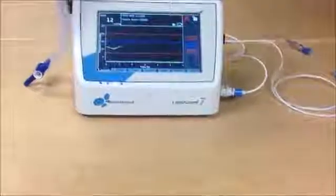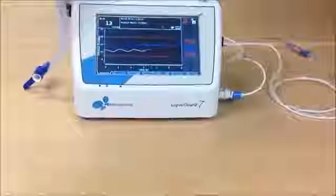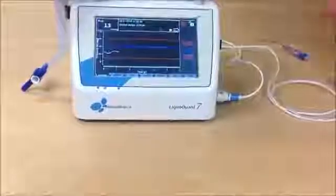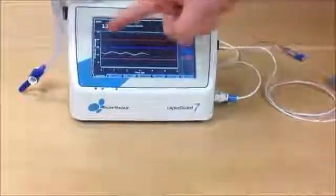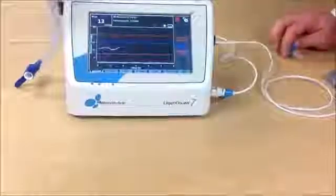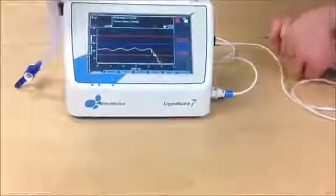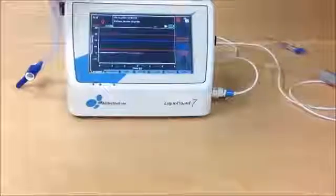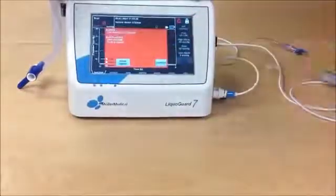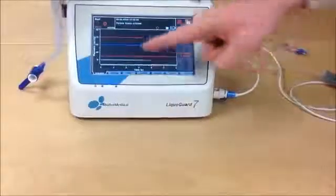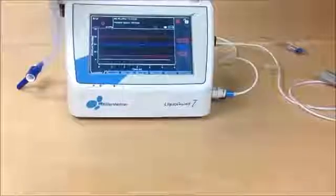Likvogart also detects disconnection of the tube set. In this situation, everything is okay. We see a pulsating pressure. When I now disconnect the tube set from the patient, we will have two alarms telling us that we have a problem. First, we have a low pressure alarm, because we are below the lower red alarm border.